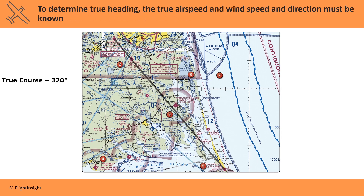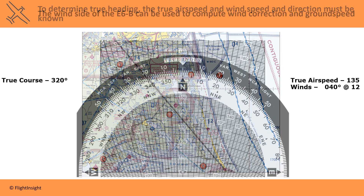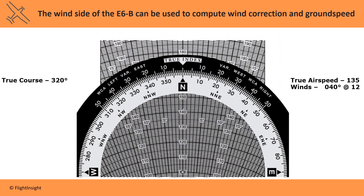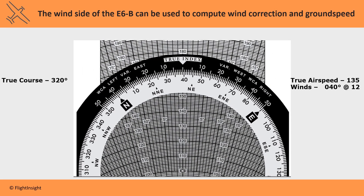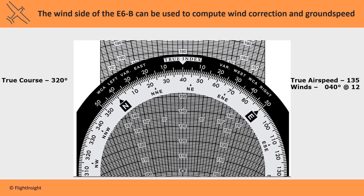Now we have to take account of the wind, which will require us to adjust our heading to the left or right to maintain course, and which will change our ground speed. We need to know our true airspeed and the wind direction and velocity. Let's say we're flying at 135 knots in winds out of 040 degrees blowing 12 knots. We'll use our E6B to determine wind correction and ground speed. First, line up the wind direction of 40 degrees under the true index and make a mark for the wind speed. The wind is 12 knots, so we'll put the mark 12 knots above that center hole.